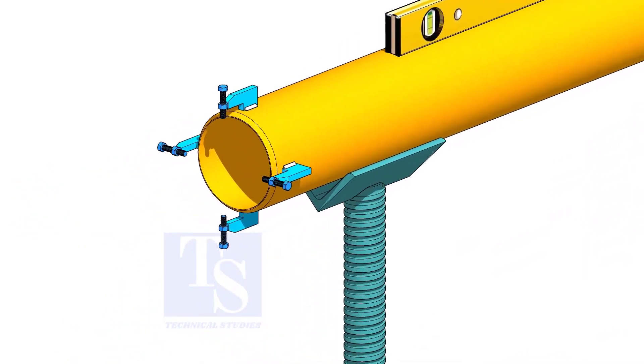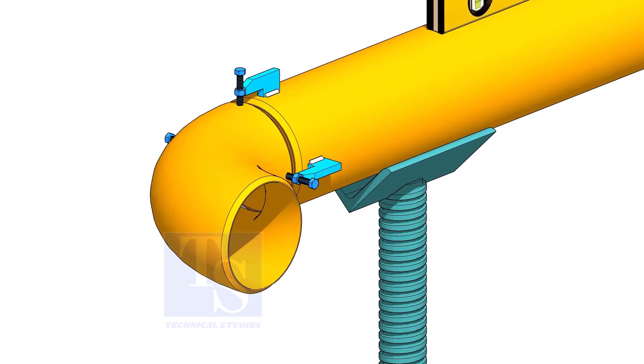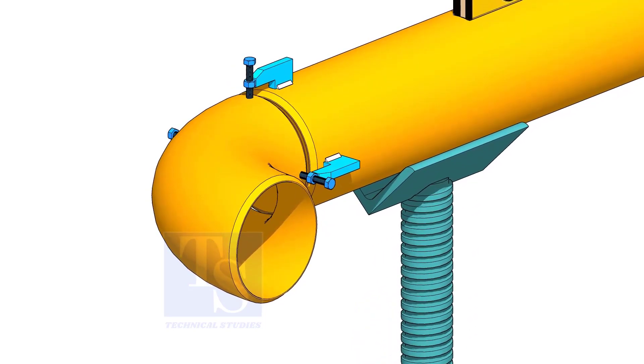Fix the clamps on the pipe. Put the elbow and the gap rod and slightly tighten the clamp bolts.